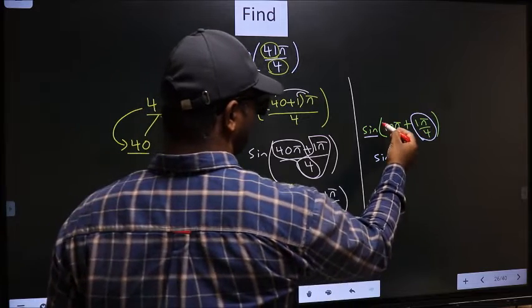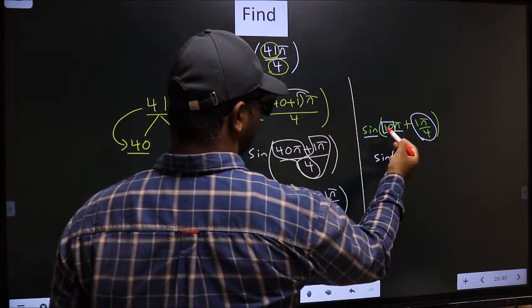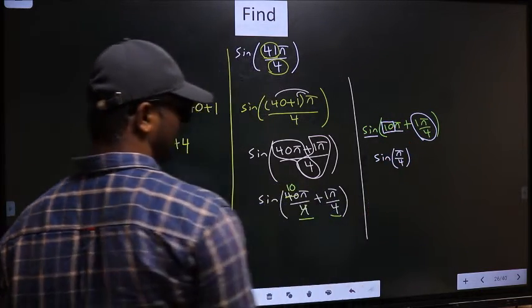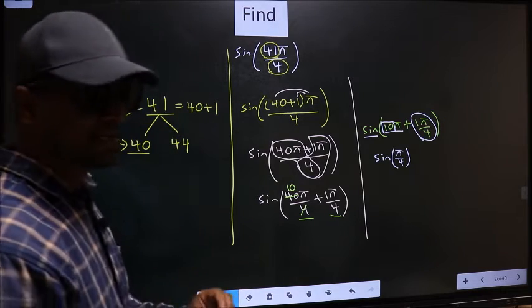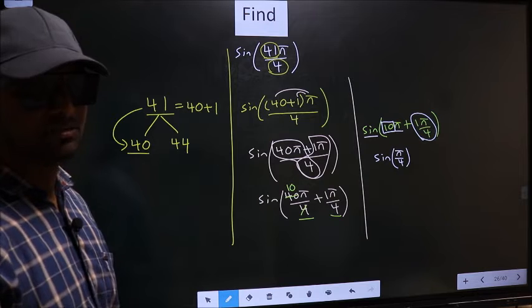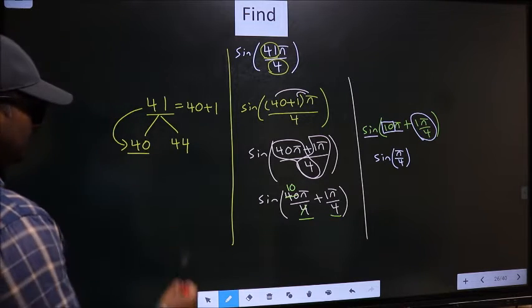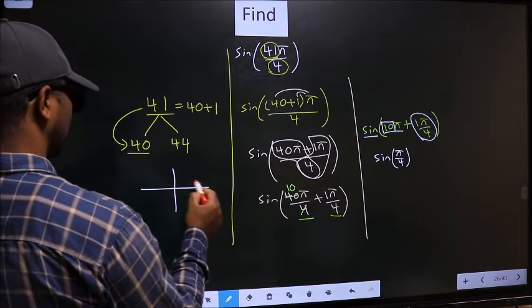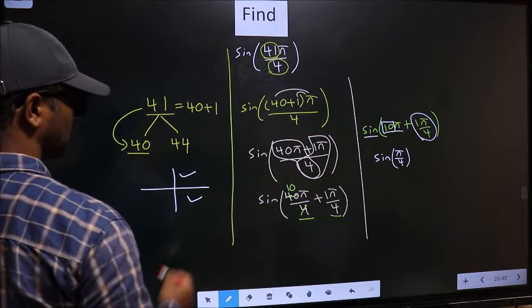To answer that you look at the number before π which is 10. And 10 is even. And all the even multiples of π they may lie in the first or in the fourth quadrant.